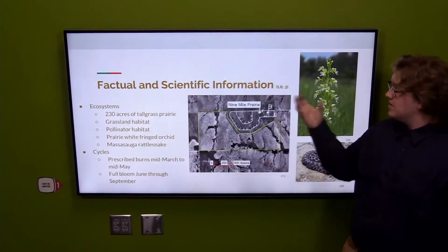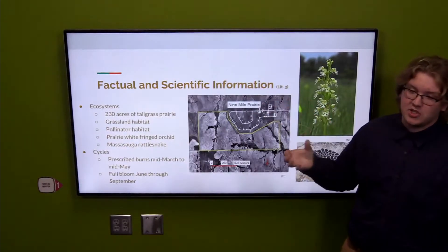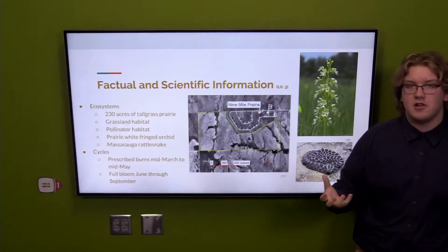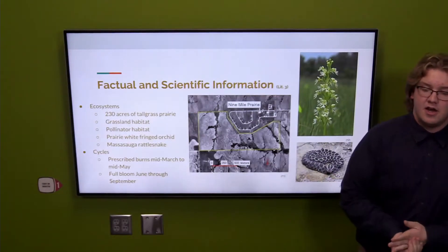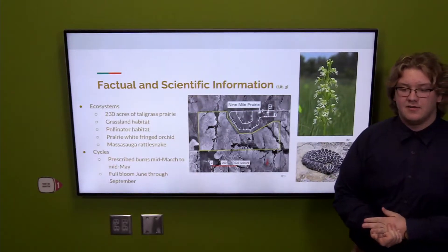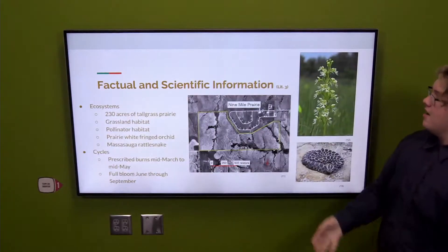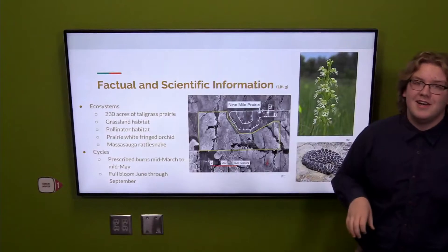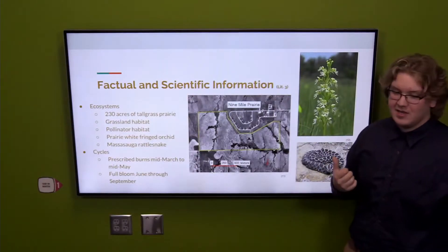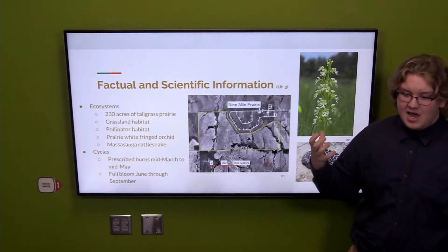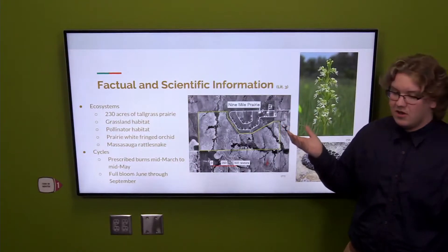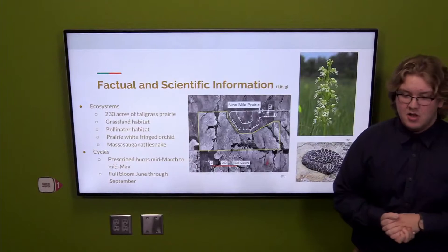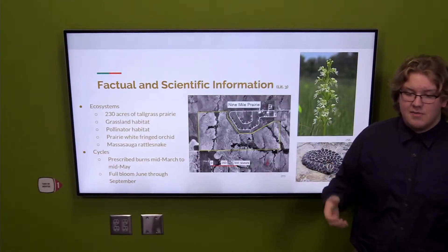So for factual and scientific information on increasing biodiversity on campus, we wanted to look at examples close by to base our ideas on. Luckily we have Nine Mile Prairie, nine miles from campus, which is an excellent resource for us. It has 230 acres of tall grass prairie and it's a perfect blueprint for what we want to do with East Campus.